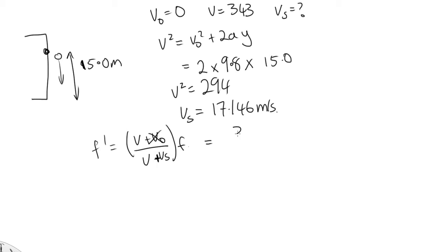And so f dash is equal to 343 over 343 plus 17.146 times the initial frequency, which was the 600 hertz. So solving that on your calculator, you end up with 571 hertz. So it's a lower frequency as the wave fronts are more spaced out when they hit you.